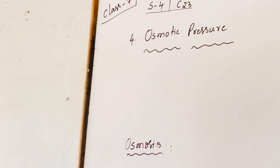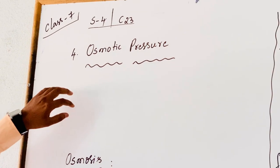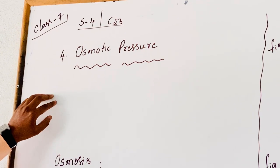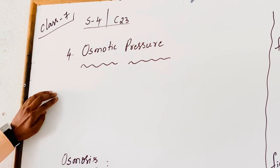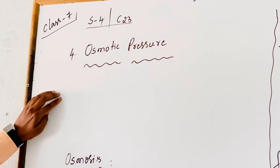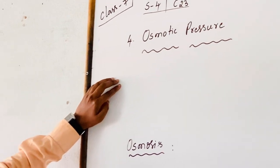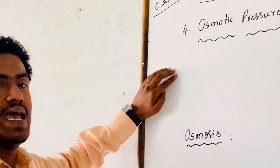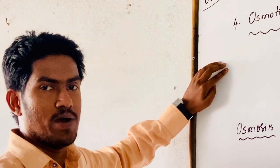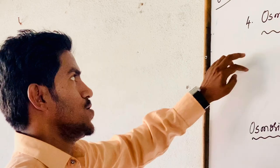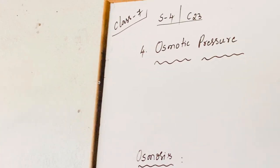Out of the four Colligative Properties, the first one is RLVP — Relative Lowering of Vapor Pressure. The second one is Depression in Freezing Point. The third one is Elevation of Boiling Point. Coming to the fourth one, that is Osmotic Pressure.